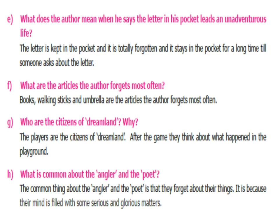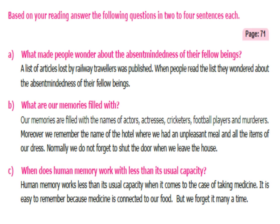What are the articles the author forgets most often? Books, walking sticks, and umbrellas are the articles the author forgets most often. Who are the citizens of dreamland? Players are the citizens of dreamland — after the game they think about what happened on the playground. What is common about the angler and the poet? Both forget about their things because their minds are filled with serious and glorious matters.